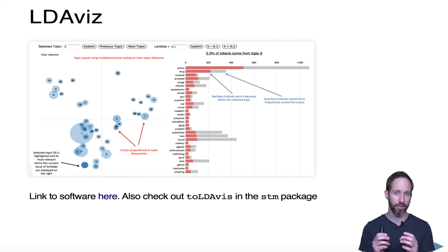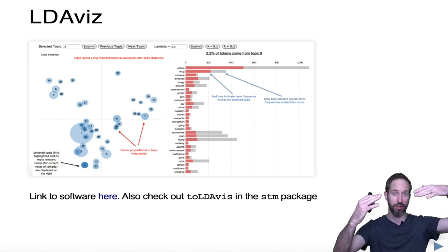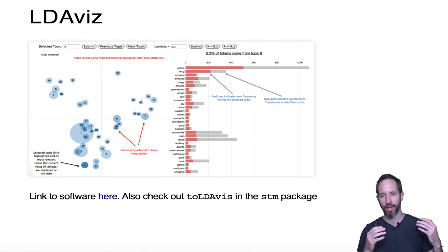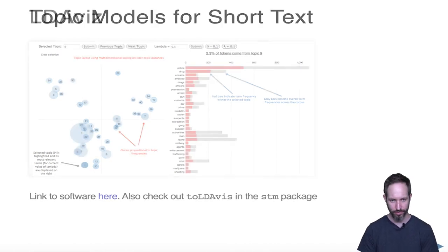What you can do with this is start to see, well, if there's two topics that are really close to each other, maybe they're the same topic and maybe you should choose a lower value of K. On the other hand, if LDAvis shows you a giant kind of death star of a topic, then you need to increase your value of K, because likely that giant death star is actually a lot of little smaller topics.